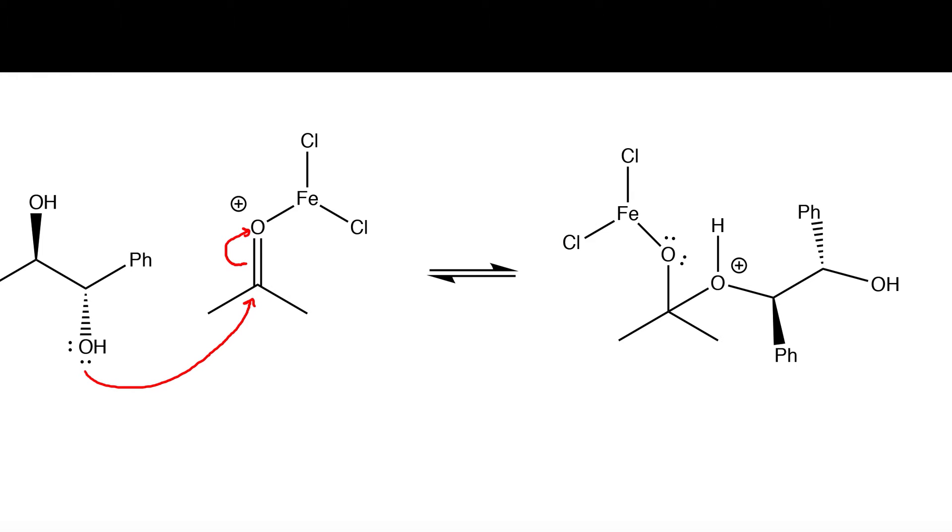The result of that step is this intermediate right here. Next an intramolecular proton transfer will occur. The lone pairs on this oxygen grab this proton and we break the bond and we push the electrons onto this oxygen.